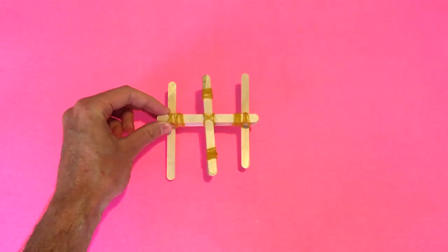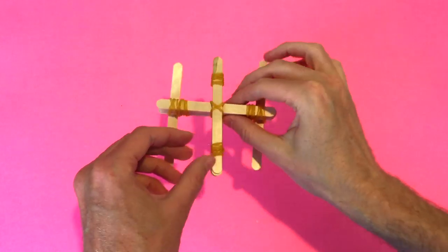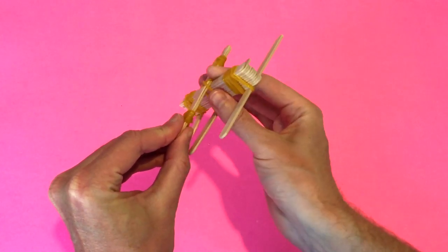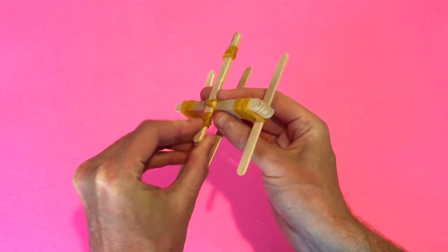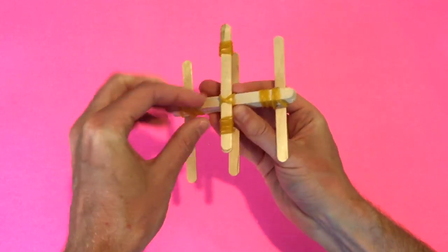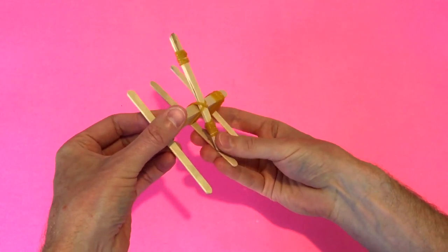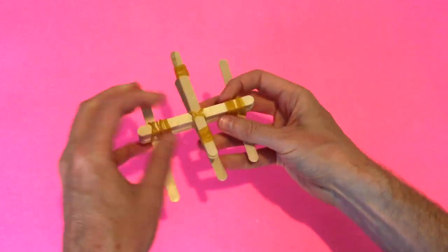And this is what we're left with. We can then lift our model up and slide that top catapult section through, just so then when you press, it gets a nice angle on it.